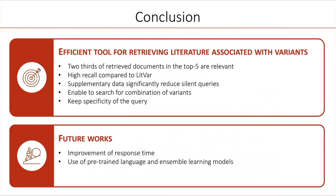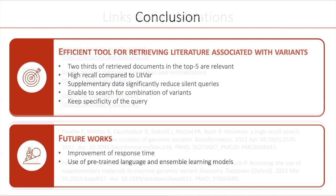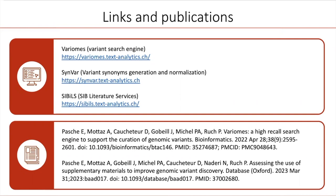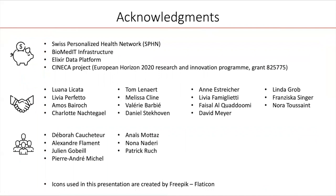To conclude, Variome is an efficient tool to retrieve literature associated with variants. It retrieves about two-thirds of relevant documents in the top five. Variome has a very high recall compared to LitVar. The use of supplementary material significantly reduces the silent queries, and especially the use of images, which is quite rare for literature search engines. It also enables searching for combinations of variants. Variome keeps the specificity of the queries — we are not doing aggregation of variants. As future work, we are working to improve the response time and also investigating the use of pre-trained language models and ensemble learning models. Variome, SYNVAR, and Sibils are publicly available — you can find the links to these services and two publications about Variome on this slide. This project has been supported by the Swiss Personalized Health Network, Biomedit Infrastructure, Elixir Data Platform, and the SYNECA project. We would like to also thank all the people who have contributed to the development of Variome, tested it, and given us suggestions and feedback.